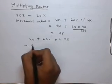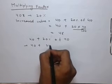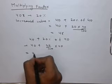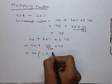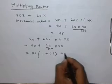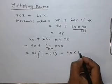This can be written as 40 plus 20 by 100 into 40. 40 can be taken as common. Then this can be written in this format: 40 into 1.2.